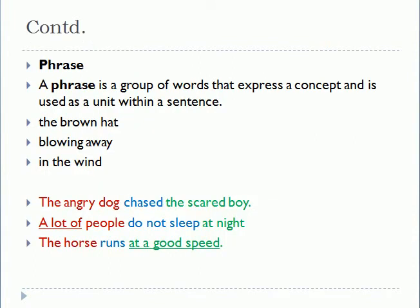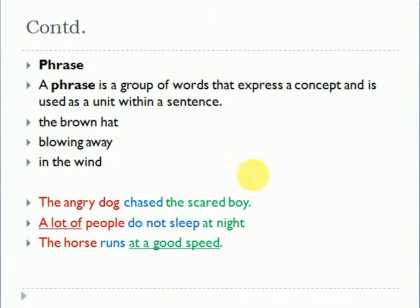The next unit is phrase — a group of words that expresses a concept and is used as a unit within a sentence. Phrases are meaningful in themselves, but when combined together they form a sentence. For example: 'the brown hat', 'blowing away', and 'in the wind' are three separate phrases, but combined they make: 'The brown hat is blowing away in the wind' — a full sentence.